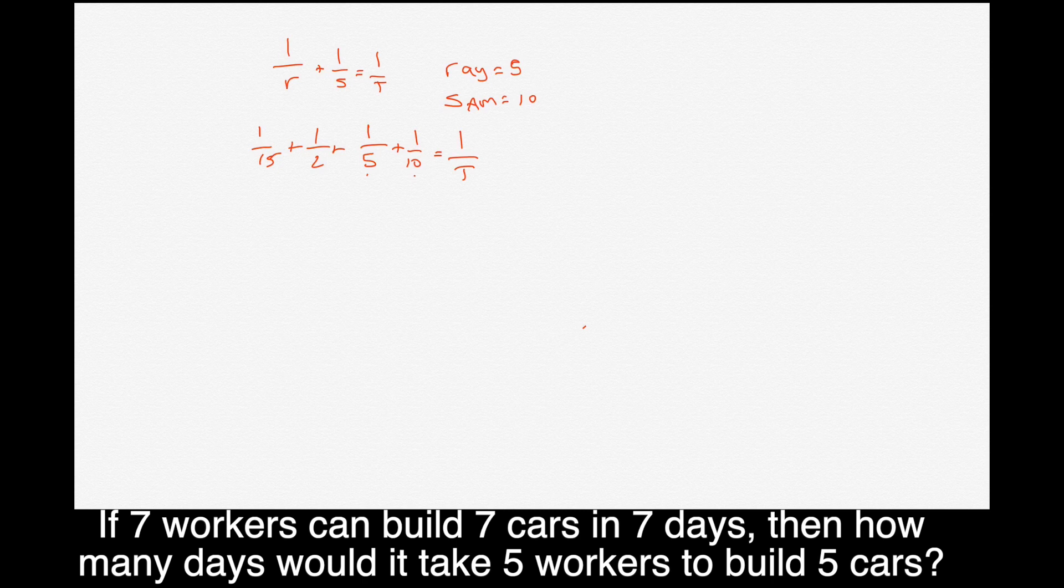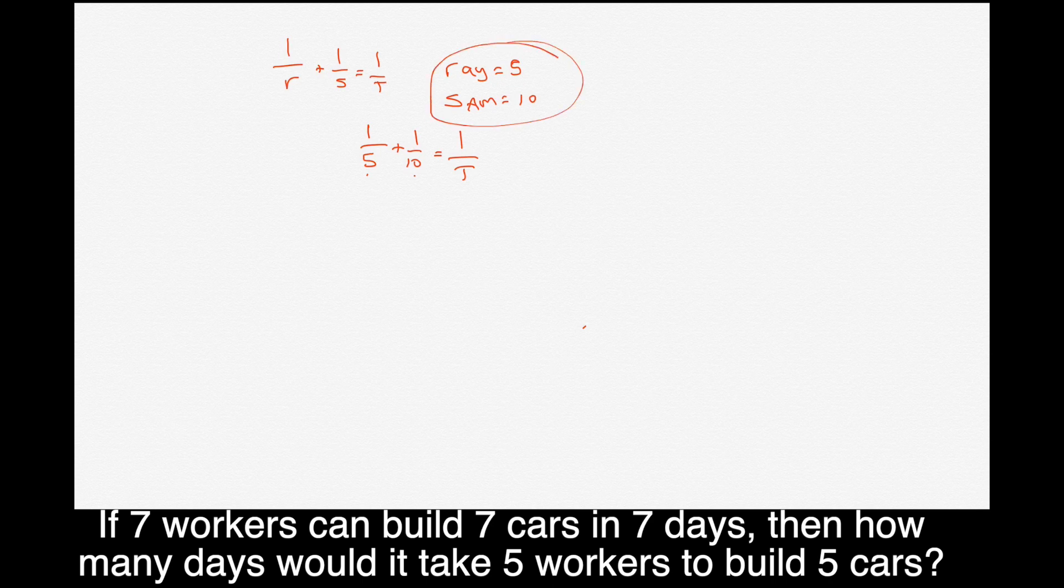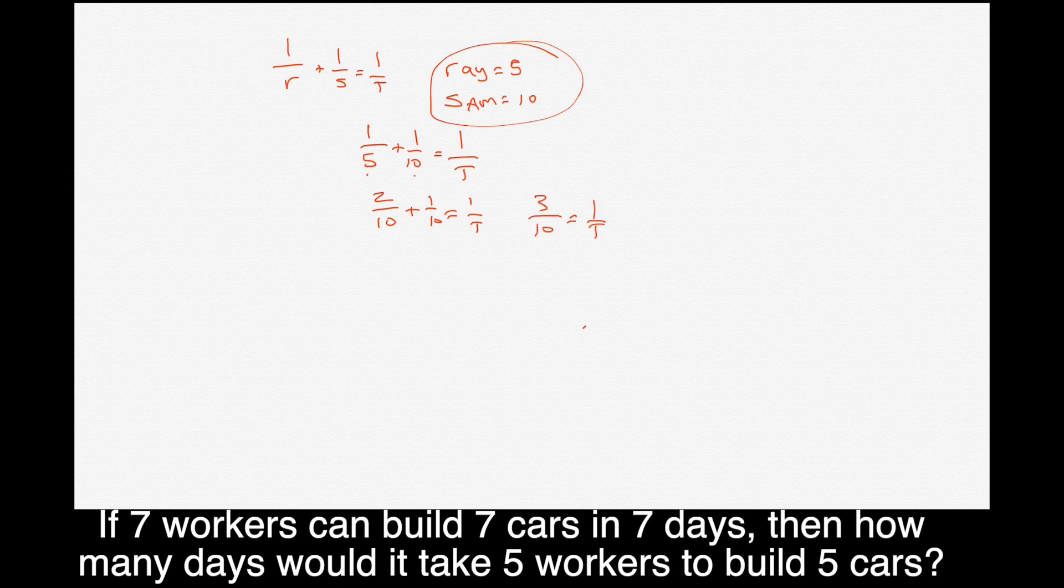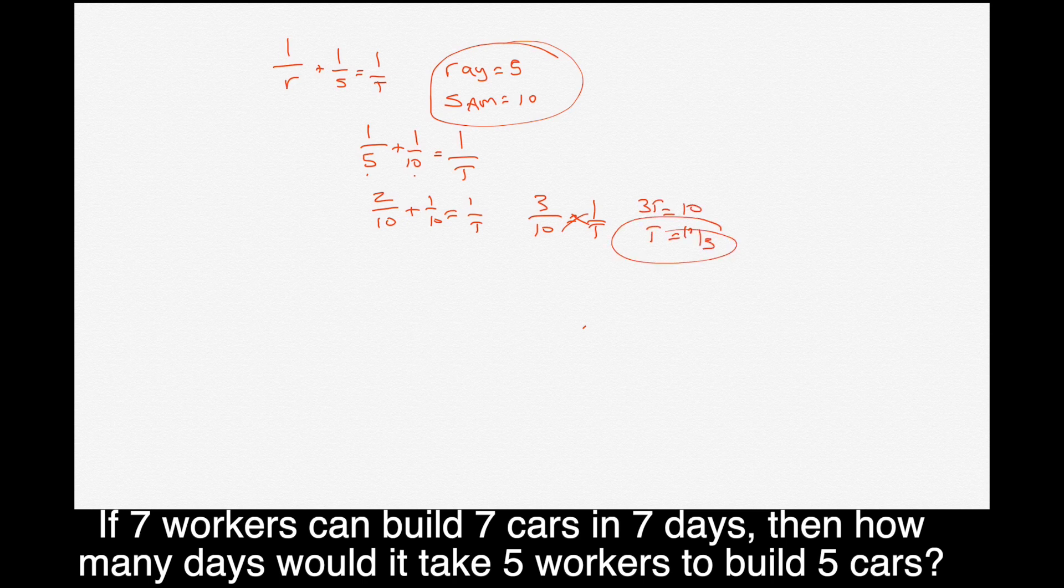And then the inverse of all of this, meaning like 1 over 5 plus 1 over 10 equals 1 over T. And then when we solve for T, we're going to figure out how long it would take these two guys to do it together. So 1 over 5 plus 1 over 10, that's like 2 over 10 plus 1 over 10 equals 1 over T. So 3 over 10 equals 1 over T. Cross multiply 3T equals 10. T equals 10 thirds. Meaning together those guys would take 10 thirds days or 3 and 1 third days to do the project.